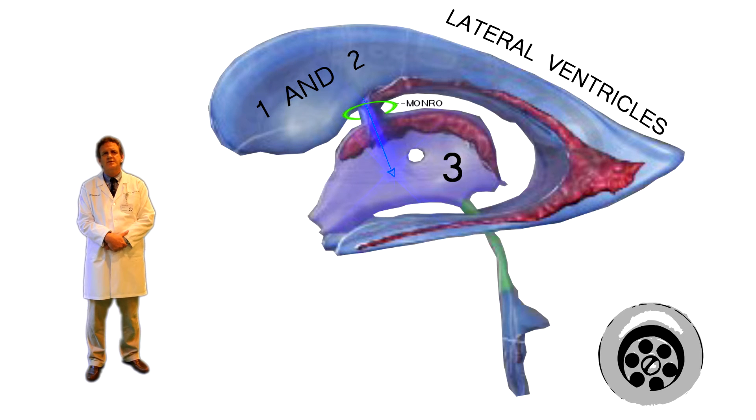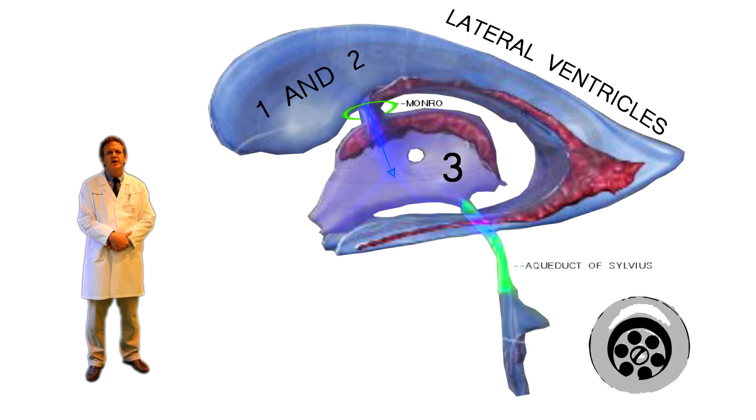There is a similar structure connecting the third and fourth ventricles, but as you can see, this structure is far longer and thinner than the foramen of Monroe. Because of this, it is called an aqueduct.